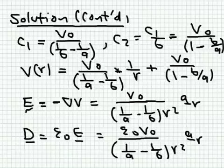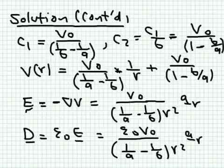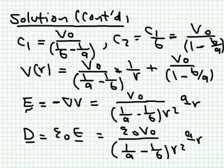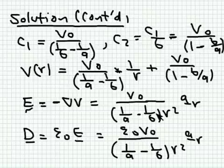With C1 and C2 known, V as a function of r is fully determined. Applying the V method, we differentiate V with respect to r to get the electric field: E equals C1 over (1/a minus 1/b) times 1 over r squared in the r-direction. Then D equals epsilon_0 times E — no dielectric is mentioned so we assume air — giving us the electric flux density D.